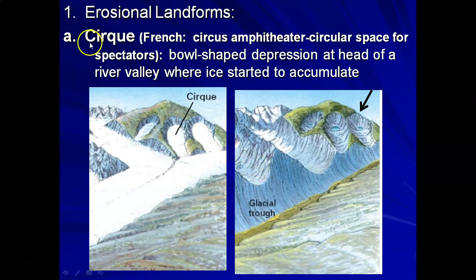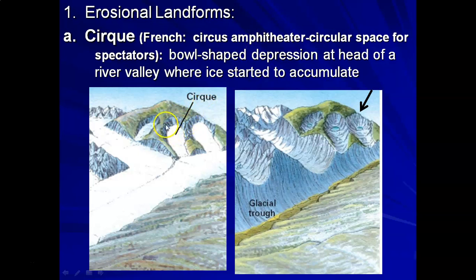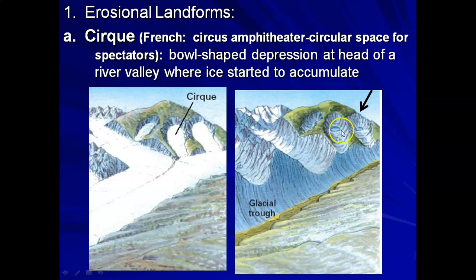The first landform is called a cirque. A lot of these terms are French, coined by French glaciologists studying these landform features well over a century ago in the Alps of Europe. Cirque is French for amphitheater — a circular space. A cirque is a circular or scooped-out bowl-shaped depression at the head wall of a river valley. That's where the erosion begins with an alpine glacier. You can call it a cirque glacier when small and just beginning. During an interglacial, after the ice has melted back, you wind up with high mountain areas with these scooped-out circular depressions called cirques.